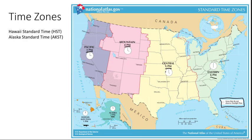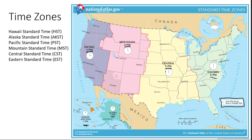Notice the abbreviations for each time zone: each ends in ST for Standard Time, with the first letter indicating the zone. Eastern Standard Time is EST, Central Standard Time is CST, Mountain is MST, Pacific is PST, Alaska uses AKT, and Hawaii uses HST.